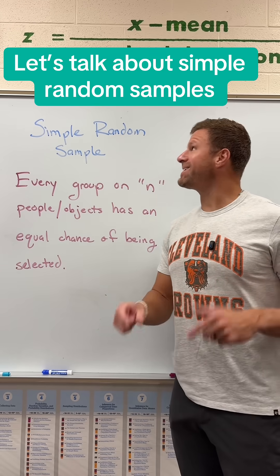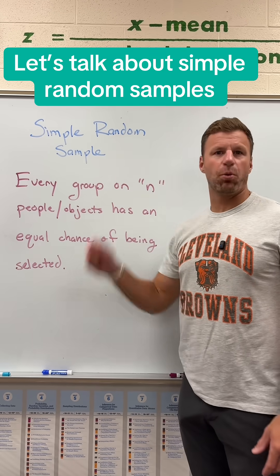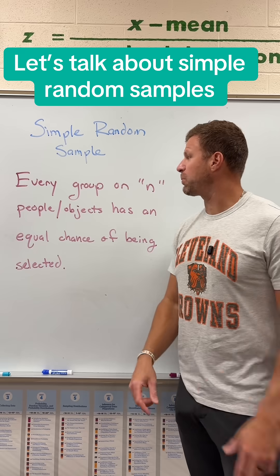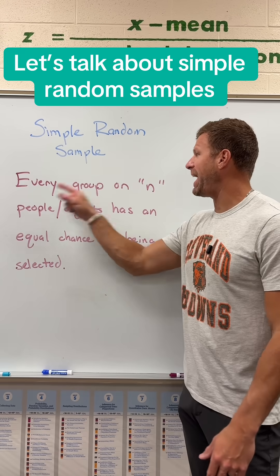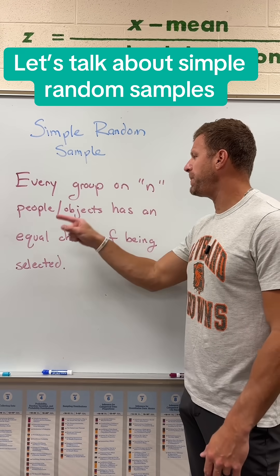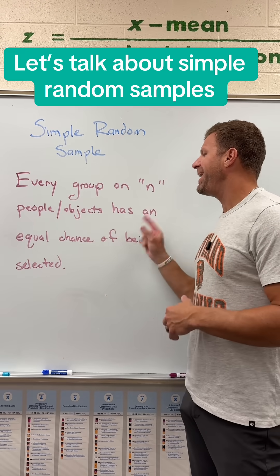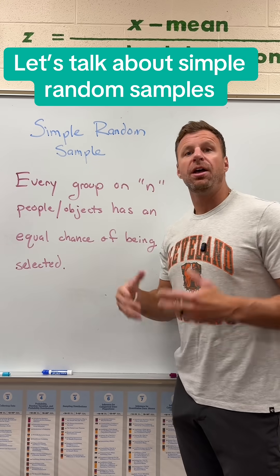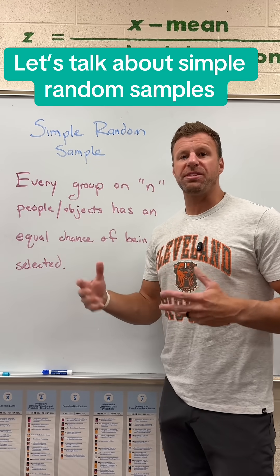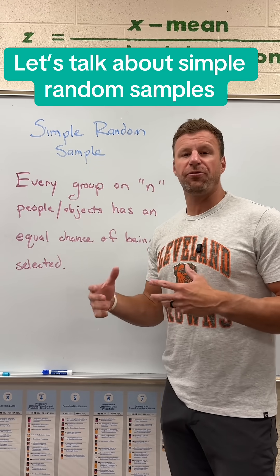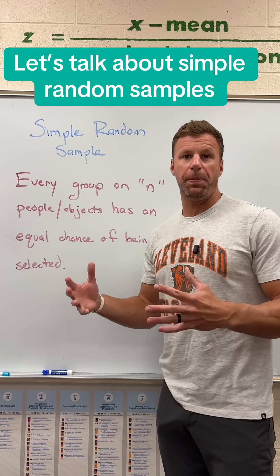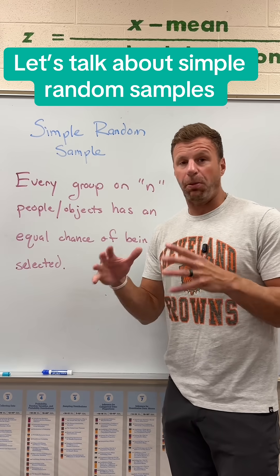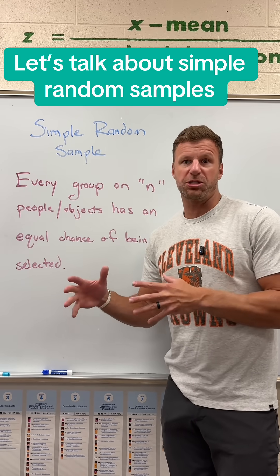What's up my stats artists? Let's talk about a simple random sample. The definition of a simple random sample is that every group of n people or objects has an equal chance of being selected. So a simple random sample says if you're looking for a sample of 50 people, then any sample of 50 people is possible.